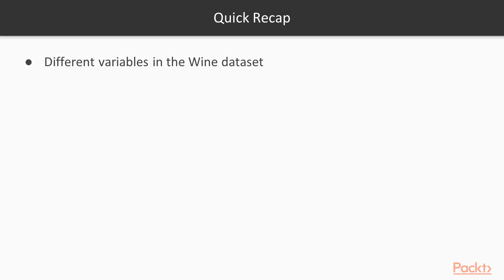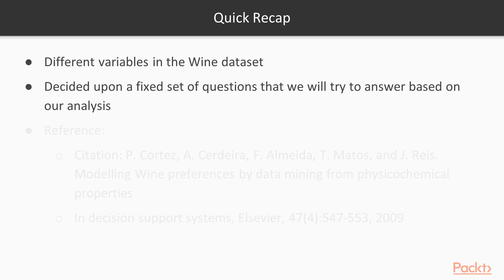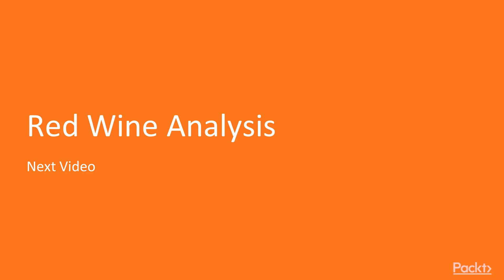To recap: we took a look at the different variables in the wine data set and decided upon a fixed set of questions that we will try to answer based on our analysis in the subsequent videos. For reference, you can refer to the original paper about the data set for more information. In the next video we will be doing red wine analysis.